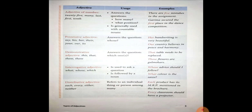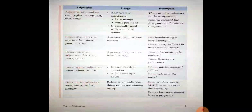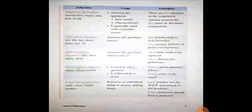Now come to the fourth type: Possessive Adjective. Possessive adjective is that adjective which answers the question whose — meaning which belongs to whom. For example: her handwriting is very beautiful — here her is showing possession. Our country believes in peace and harmony — here our is telling the position of ourselves regarding the country. My book, his car, her chair — these all are called possessive adjectives.